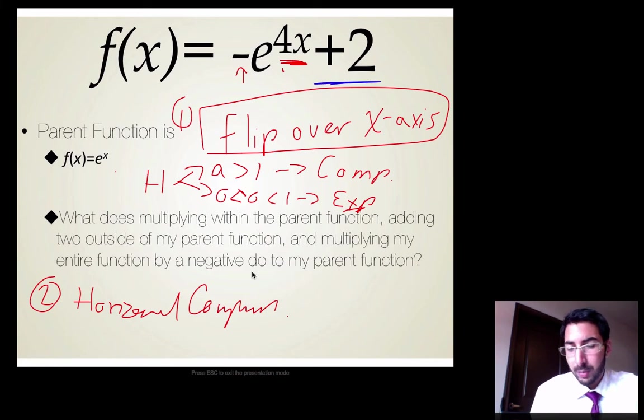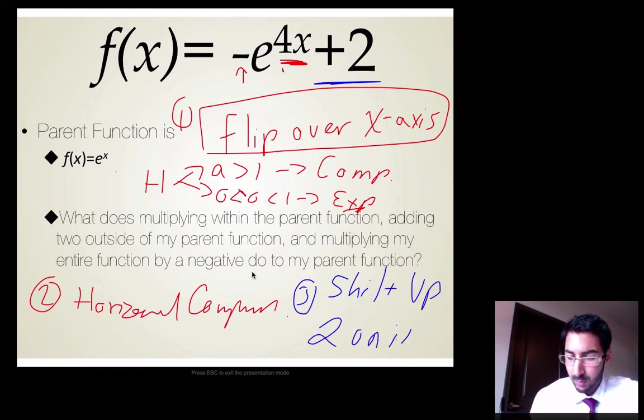Well, I have this plus 2 out here. Notice the plus 2 is outside of my function. The plus 2 is outside of my function. Therefore, it's going to be going up or down. Since it's an addition, it's going to be going up. So it's going to be shifted up 2 units. Make sure to write this down if you haven't already.